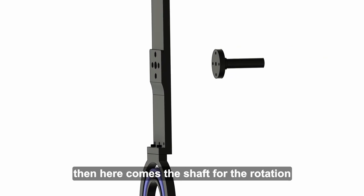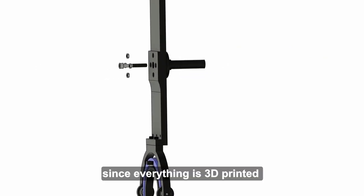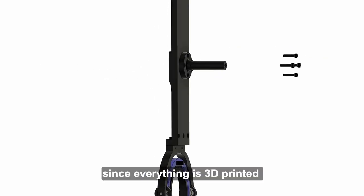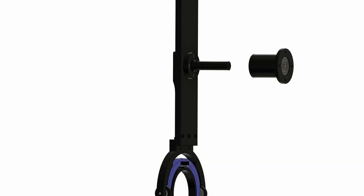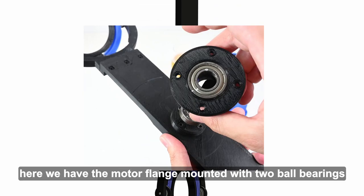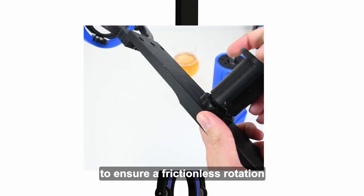Then here comes the shaft for the rotation. Since everything is 3D printed it has to be fixed with a lot of screws to increase its stiffness. Here we have the motor flange mounted with two ball bearings to ensure a frictionless rotation.